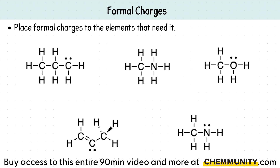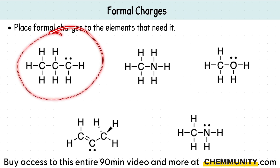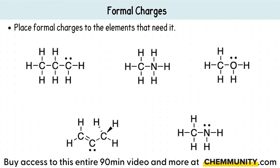Let's do that together. We'll start off with this first structure. A way to spot this is looking at different atoms — like let's say carbon — if that doesn't have the typical bonding pattern, that's your clue. That's where to look and see: is there a formal charge that needs to be there?